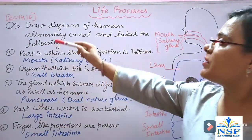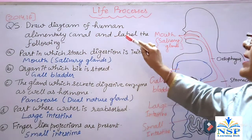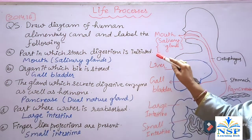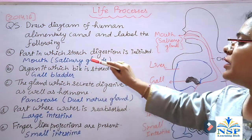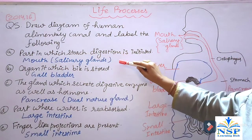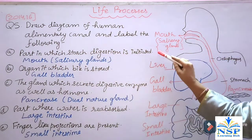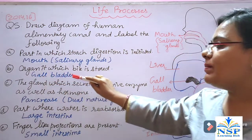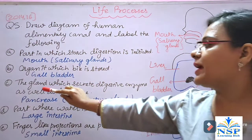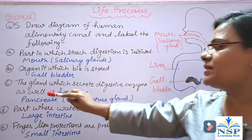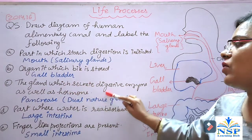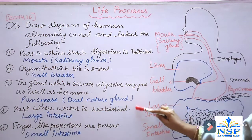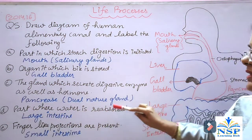Question number 5: Draw a diagram of the human alimentary canal and label the following. The part in which starch digestion is initiated — the mouth; with the help of salivary glands, starch digestion is initiated. The organ in which bile is stored — the gallbladder. The gland that secretes digestive enzymes as well as hormones — these are called dual-nature glands, and the pancreas is such a gland. The part where water is reabsorbed — the large intestine.